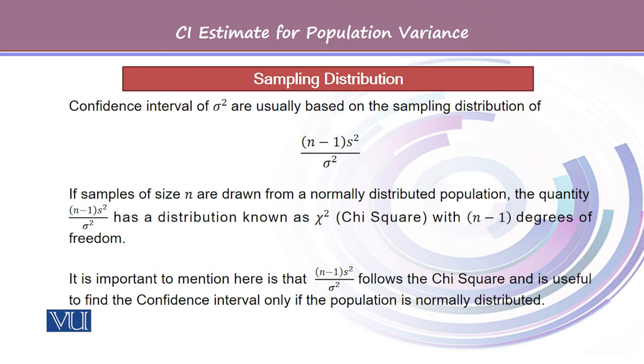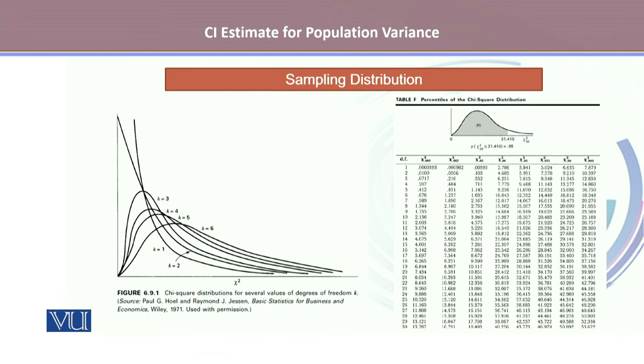It is important to mention here that this expression follows the chi-square and is useful to find the confidence interval only if the population is normally distributed.